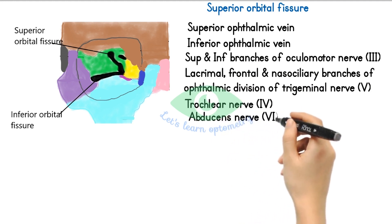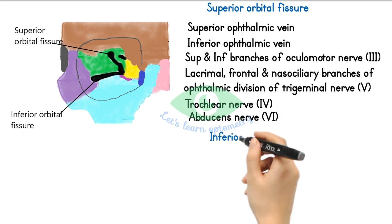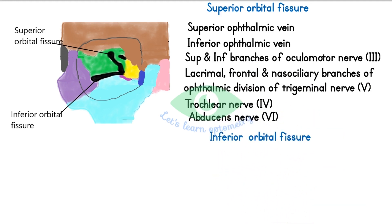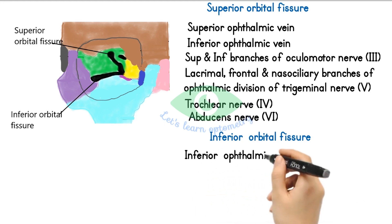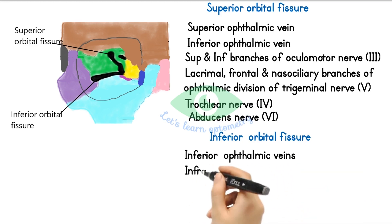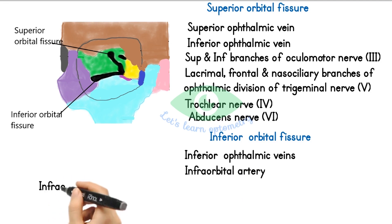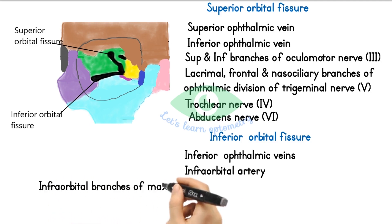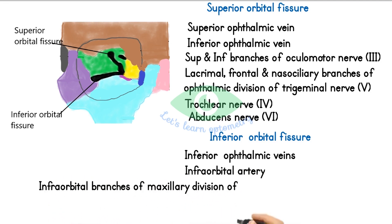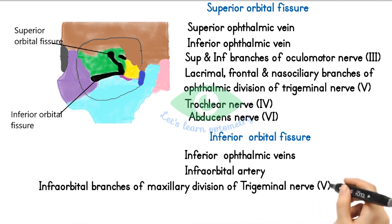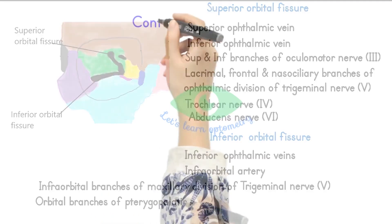The inferior orbital fissure is on the lateral border of the orbital floor. It transmits the inferior ophthalmic veins, infraorbital artery, zygomatic and infraorbital branches of the maxillary division of the trigeminal nerve, and the orbital branches of the pterygopalatine ganglion.